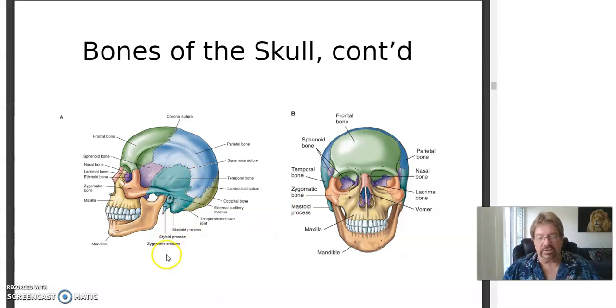Some of this other stuff like the zygomatic process, styloid, those are all parts of the temporal bone. The most complicated part is the sockets that the eyeballs fit in are called the orbits, and there are about three different bones that make those up.